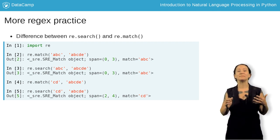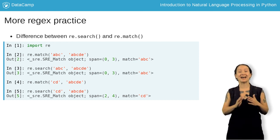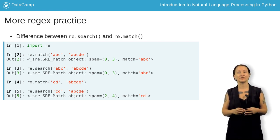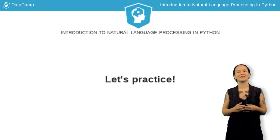If you need to find a pattern that might not be at the beginning of the string, you should use search. If you want to be specific about the composition of the entire string, or at least the initial pattern, then you should use match. Now it's your turn to try some tokenization.